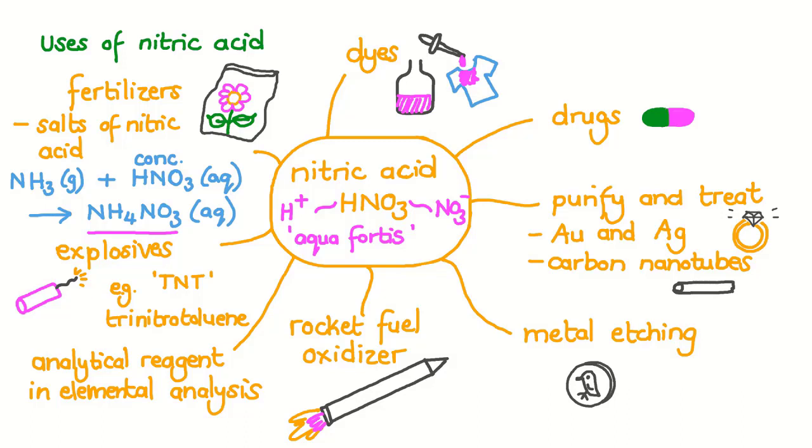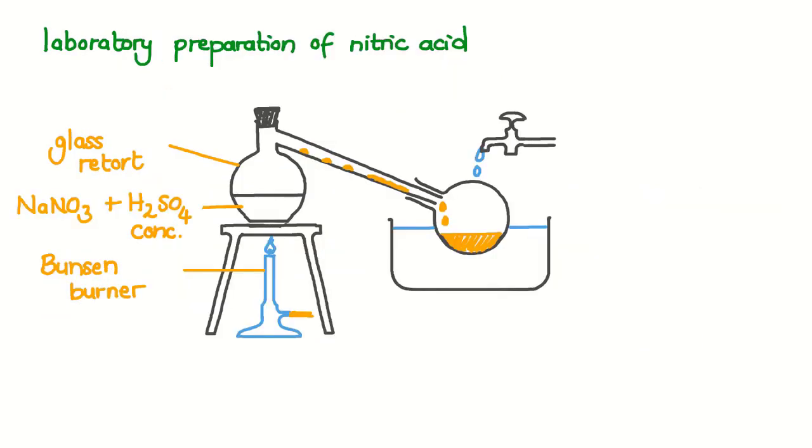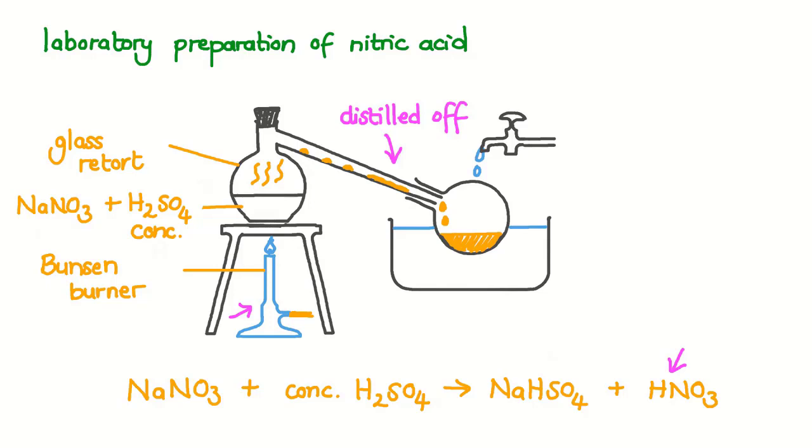Now we know how useful nitric acid is, let's have a look at how it is made in the lab. Here is the experimental setup used to make nitric acid. Concentrated sulfuric acid and a dry nitrate salt, for example sodium nitrate, are added together in a glass retort vessel. The mixture is heated with a Bunsen burner. The following reaction occurs. The products are sodium bisulfate and nitric acid. This nitric acid is given off as brown fumes in the retort vessel. The nitric acid is distilled off, cooled and collected.